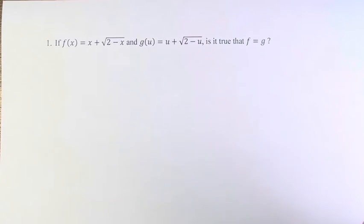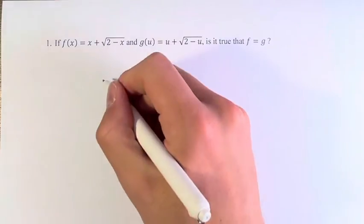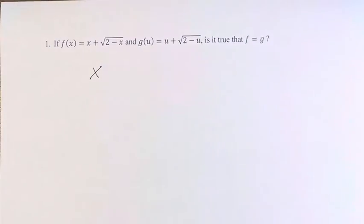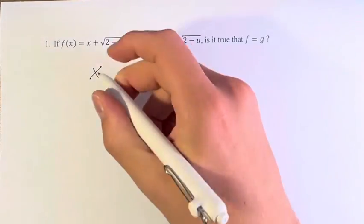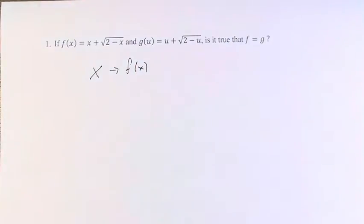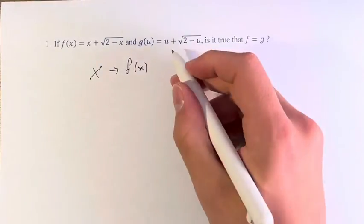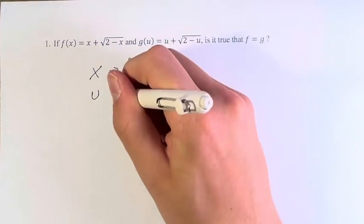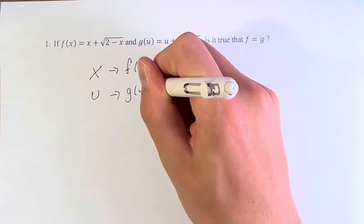So when we're dealing with functions and we're asked are two functions equal to each other, what we're meaning is that for any x input or any other variable input, do the two functions give the same output? So if we put in any value, either x or u, are they going to give the same value regardless of what function we have?